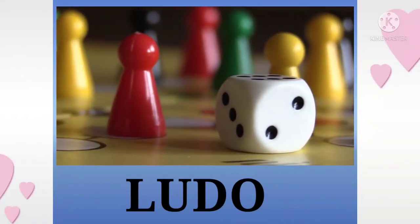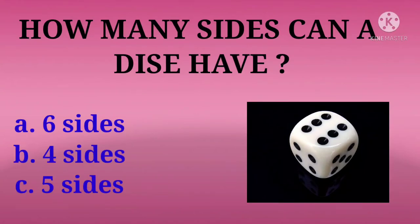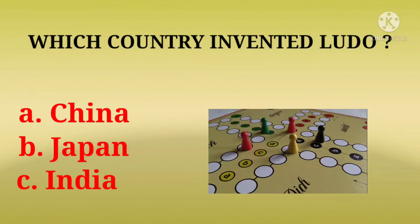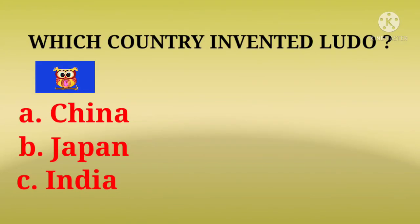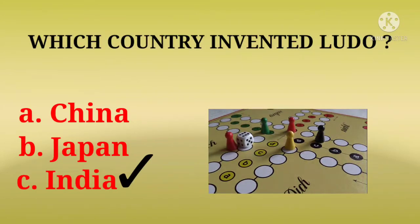Next game is Ludo. How many sides can a dice have? Dice ki kitni sides hoti hain? Options are 6 sides, 4 sides, or 5 sides. Correct answer is 6 sides. Which country invented Ludo? Kis desh ne Ludo ka avishkar kiya hai? Options are China, Japan, aur India. Correct answer is India.